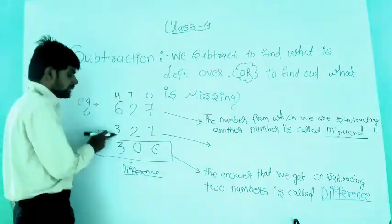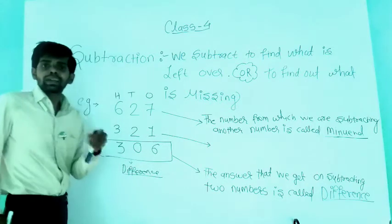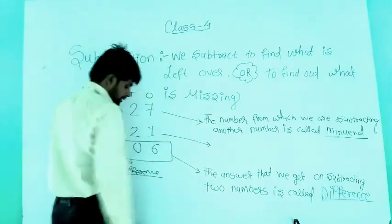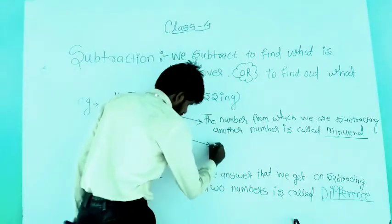The specific name to the smallest number — the number which is subtracted — is called the subtrahend.